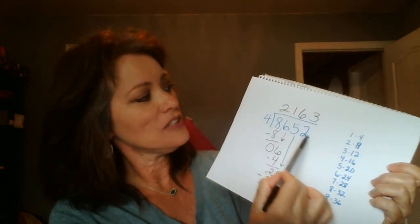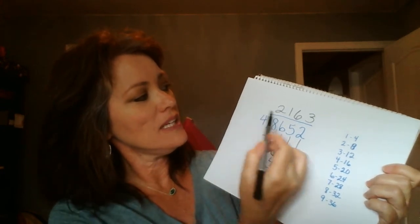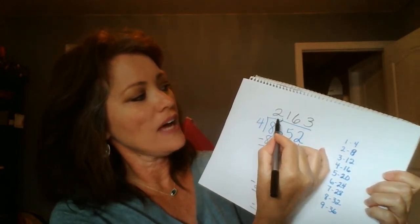that means you do not have a remainder. That means eight thousand six hundred fifty-two divided by four is two thousand one hundred sixty-three. You can check your work by multiplying two thousand one hundred sixty-three by four and make sure it gives you this dividend. And that is the correct answer.